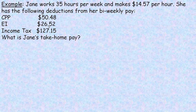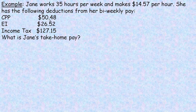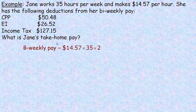So an example on the second page: Jane works 35 hours per week and makes $14.57 per hour. She has the following deductions from her bi-weekly pay: $50.48 in CPP, $26.52 in EI, and income tax deducted is $127.15. So you're asked what is Jane's take-home pay? Well, we first need to calculate her bi-weekly gross income — her income before anything is deducted.